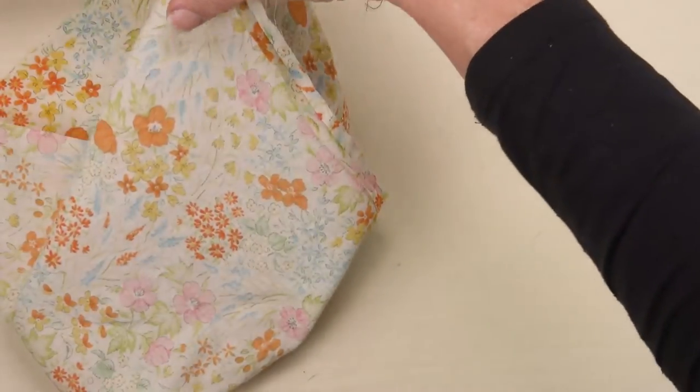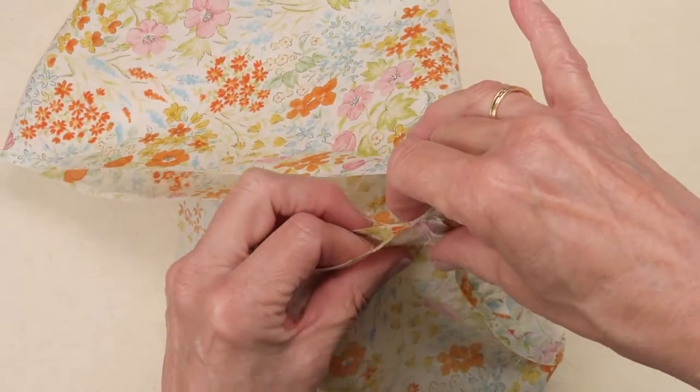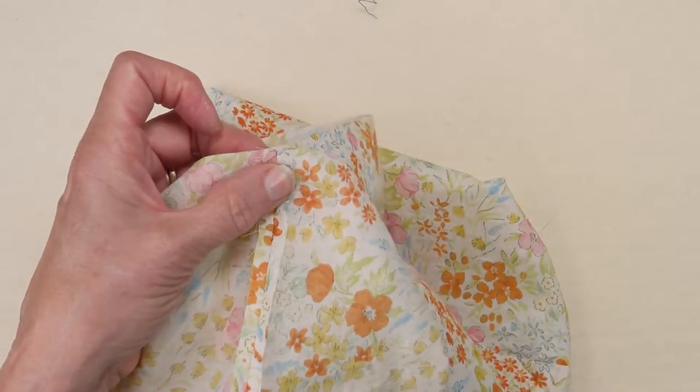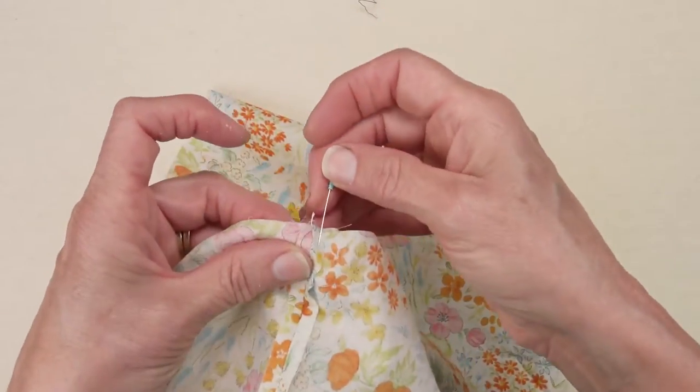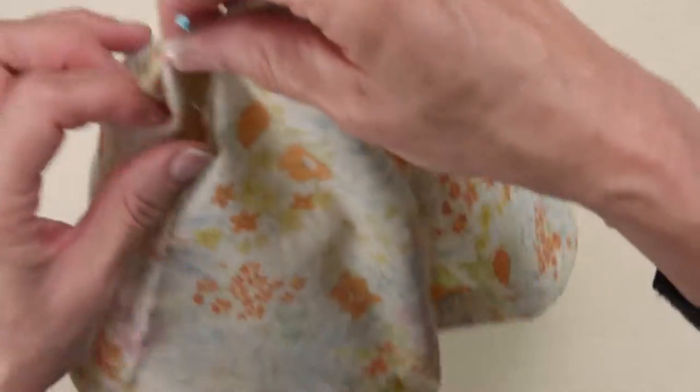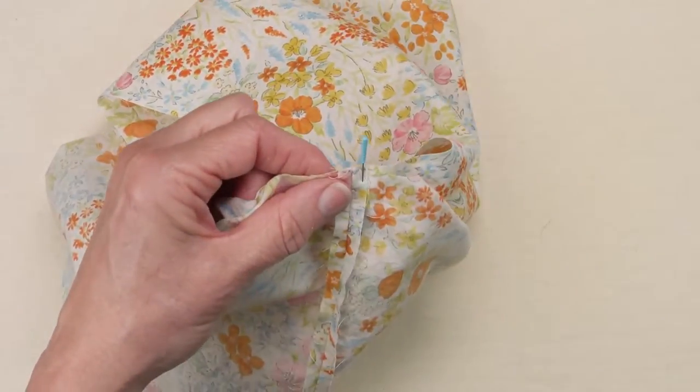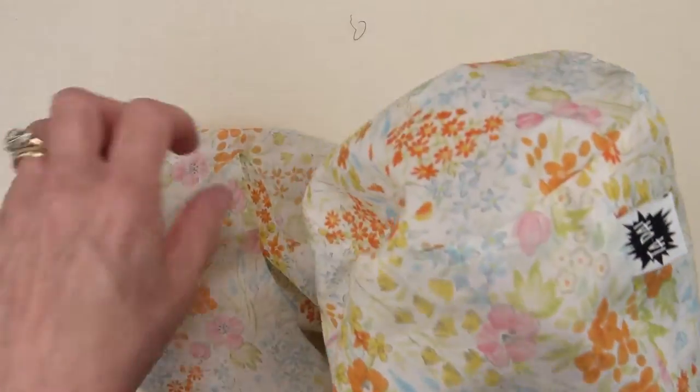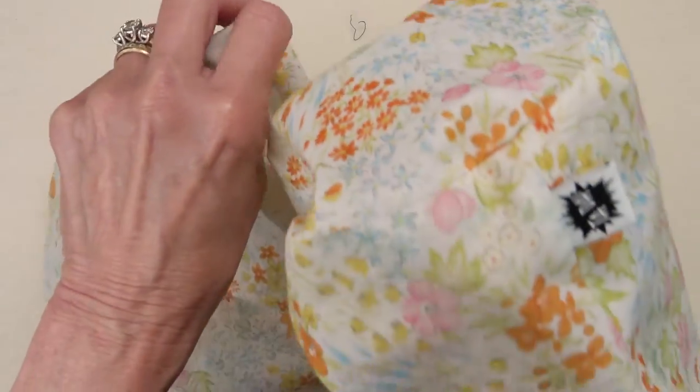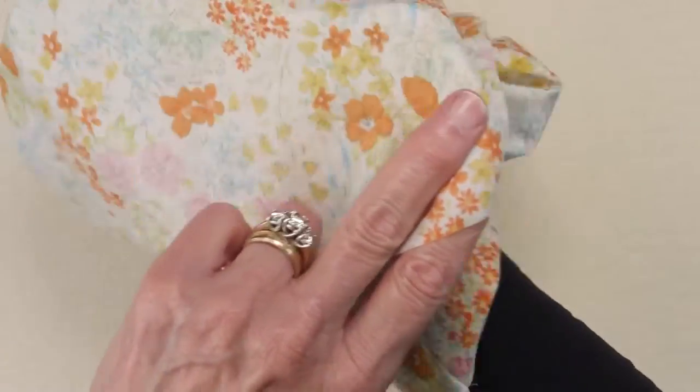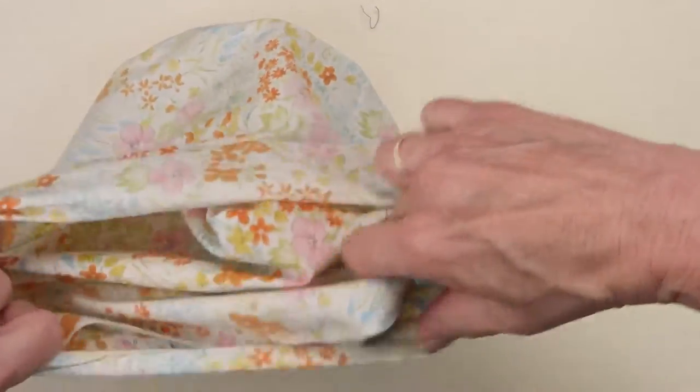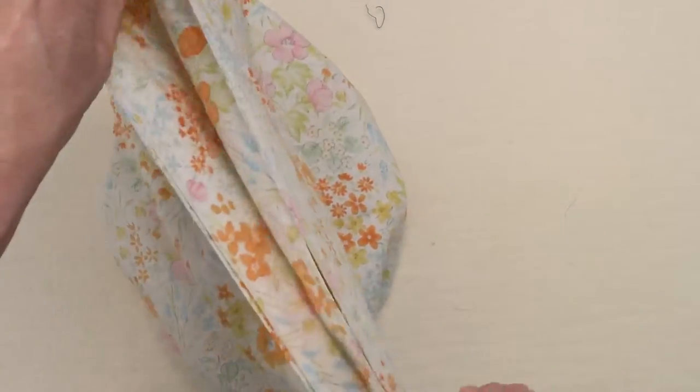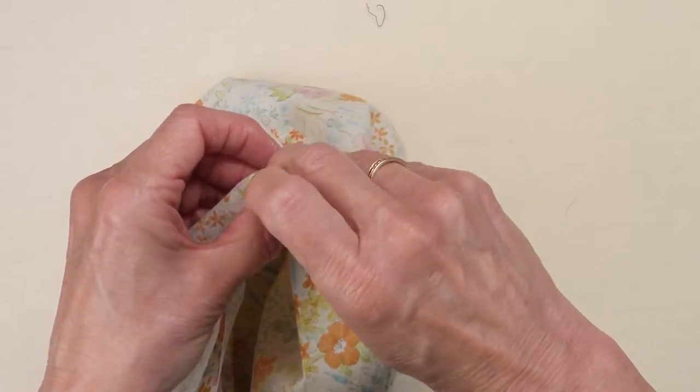Always sew right sides together. So I am going to place the center of the right side of the bag, the outside of the bag here. So this is my liner. And then I'm going to slide the outside of the bag to the inside of the lining. And find the top and match them up. And then I'm going to pin.